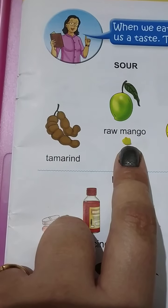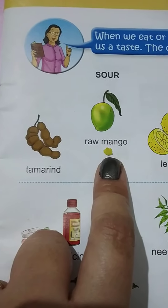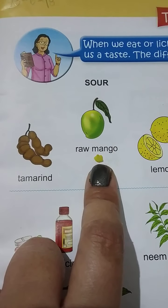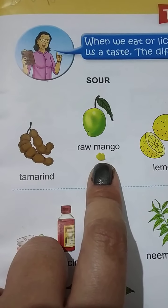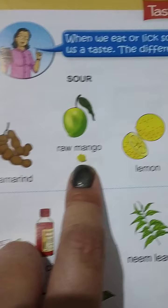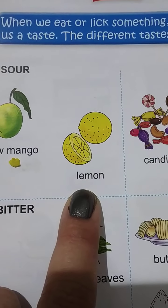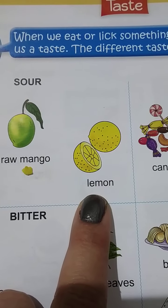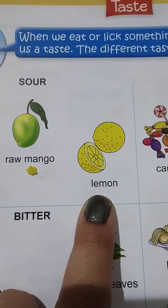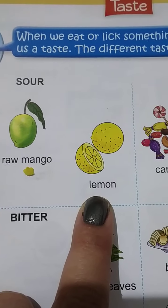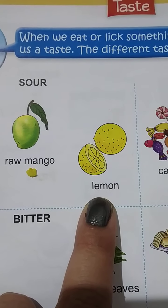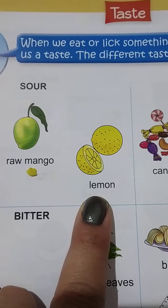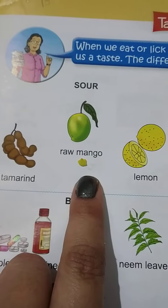Now raw mango. Raw mango means kaccha aam. Kaccha aam khaya apne? Uska taste kaisa hota hai? Katta. Jab pakk jata hai tab uska taste bhi khatta hota hai, lekin jab kaccha hota hai tab uska taste khatta hota hai. Lemon — lemon ka taste bhi khatta hota hai. Aap nimbu paani peete ho na? Agar without sugar pioge toh khatta taste karega. Usko sweet banane ke liye hum sugar add karte hai. Tamarind, raw mango, lemon.